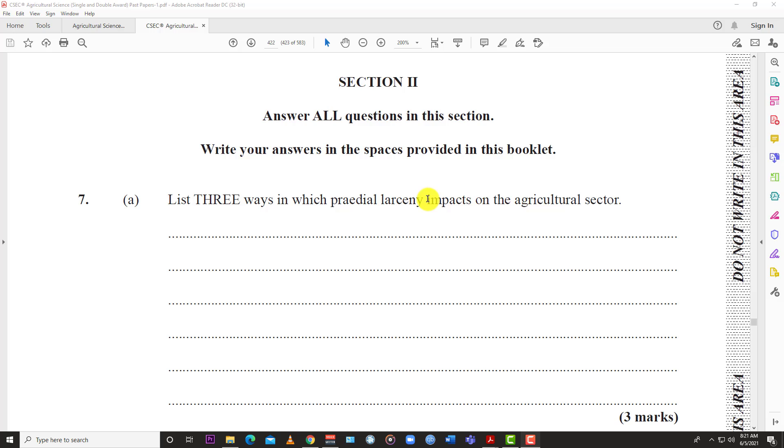Two, it can deter persons from actually entering the agricultural sector or remaining in the agricultural sector. So you can force persons to leave the sector. If you realize you're working and people are stealing your stuff, you're not gonna be encouraged to stay in the sector or enter the sector. So it deters persons from entering, and the sector is gonna remain stagnant or not fully represented.